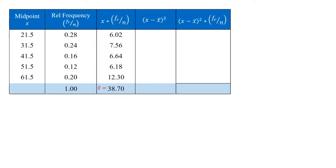To calculate the weighted standard deviation, or the weighted variance, we repeat again the midpoint values, the relative frequency, and then the weighted mean, which is 38.7 from the previous calculation.